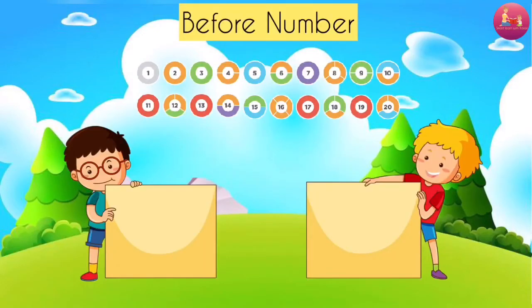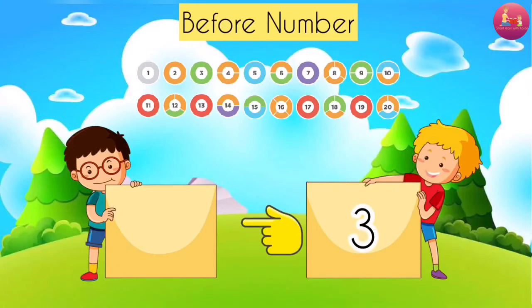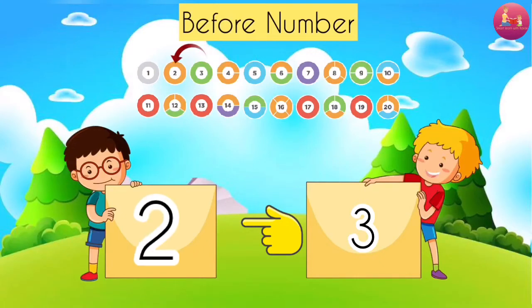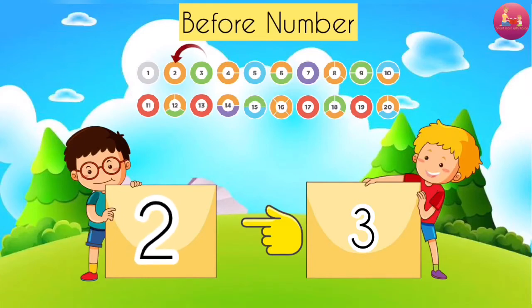Before numbers. What comes before 3? Backward counting: 5, 4, 3. Before 3 is 2.